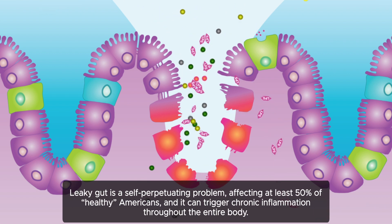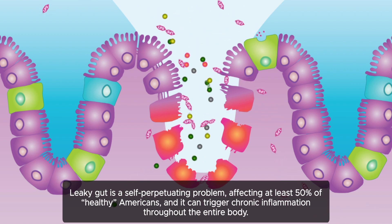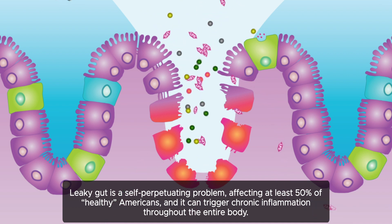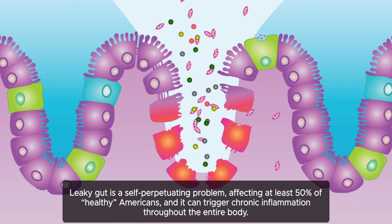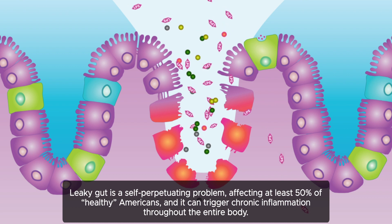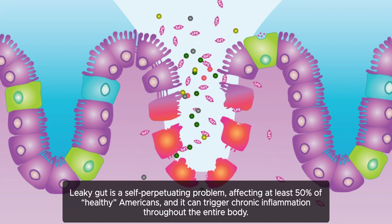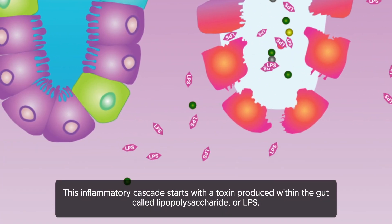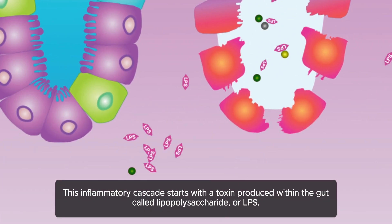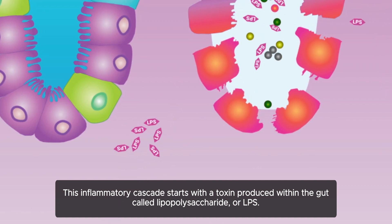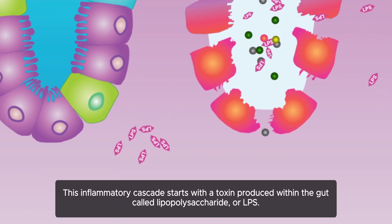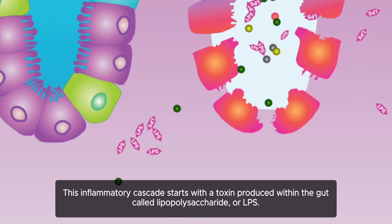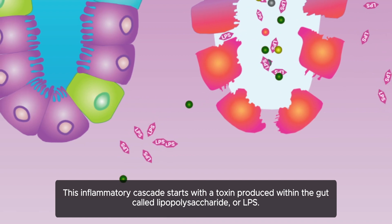Leaky gut is a self-perpetuating problem, affecting at least 50% of healthy Americans, as it can trigger chronic inflammation throughout the entire body. This inflammatory cascade starts with a toxin produced within the gut itself, called lipopolysaccharide, or LPS.